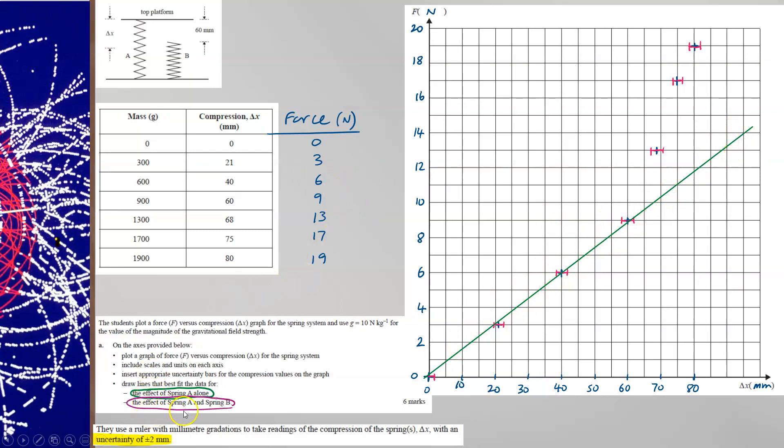Now, a line of best fit for the effects of spring A and spring B combined. Well, the whole system then will compress up to here, and then it compresses with less distance for each unit of force.